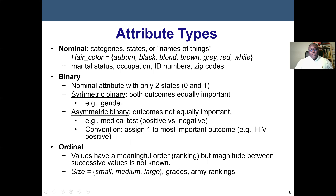Binary is also a nominal attribute, but the key is it has only two outcomes — for example, zero and one. We may have symmetric binary, where both outcomes are equally important, such as gender (male or female). We may also have asymmetric binary, where the outcomes are not equally important — for example, a medical test can have 100 positive and only two negative results. The key is binary means only two outcomes. Examples: gender is male or female; medical tests are either positive or negative, like HIV positive or HIV negative.